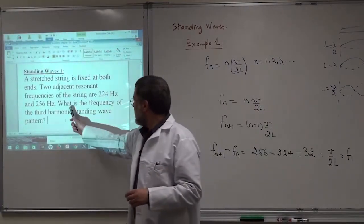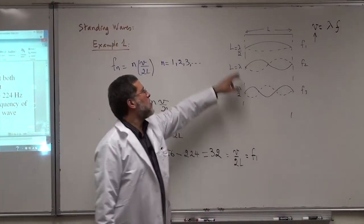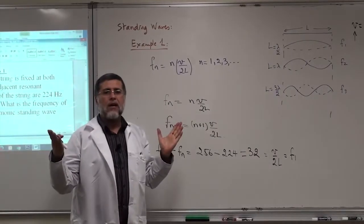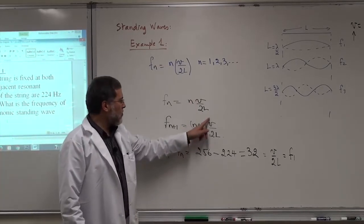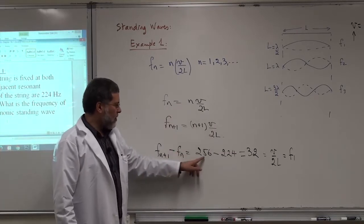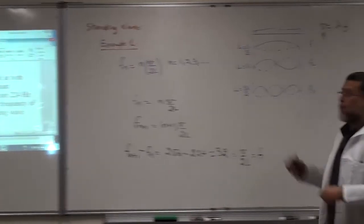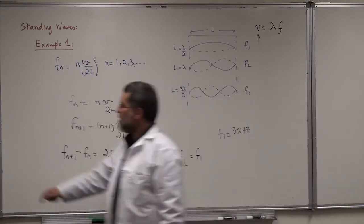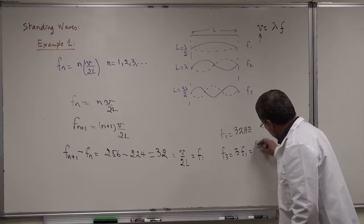Example 1: The problem asks for the frequency of the third harmonic standing wave. Two consecutive resonant frequencies are given: 256 Hz and 224 Hz. Subtracting them gives 32 Hz, which equals V/2L = F1. So F1 = 32 Hz. The third harmonic is F3 = 3×F1 = 3×32 = 96 Hz. That is the answer.